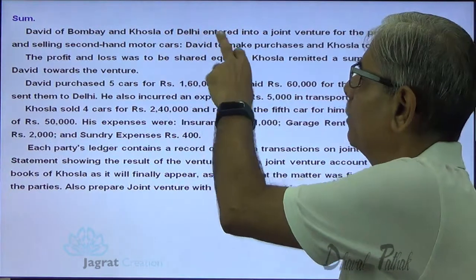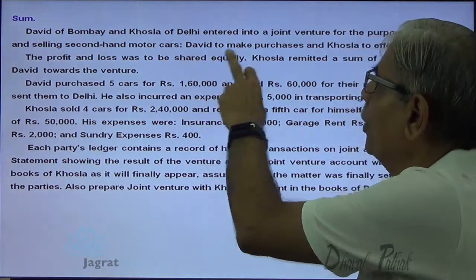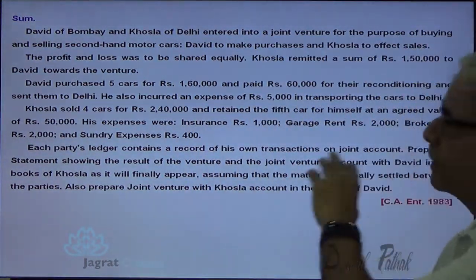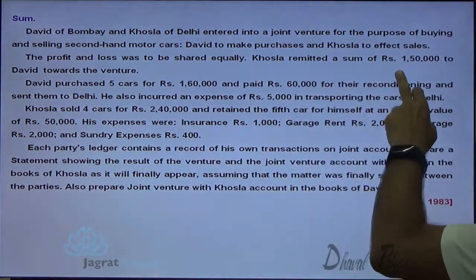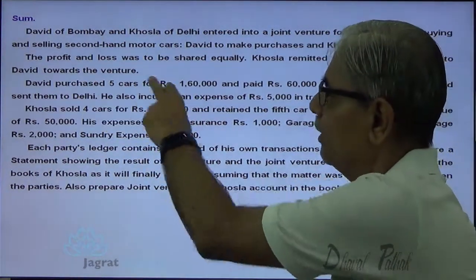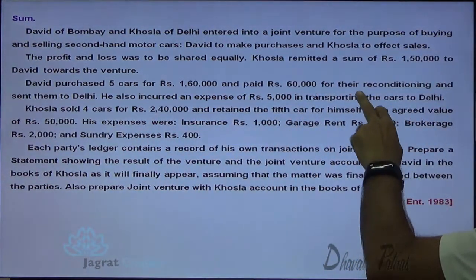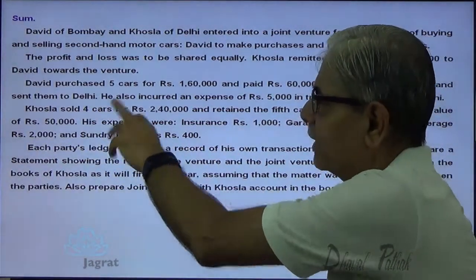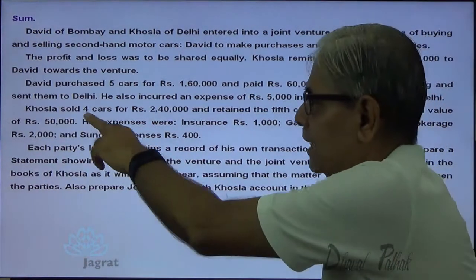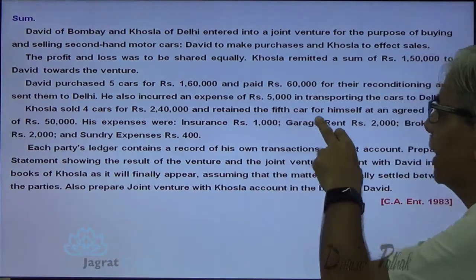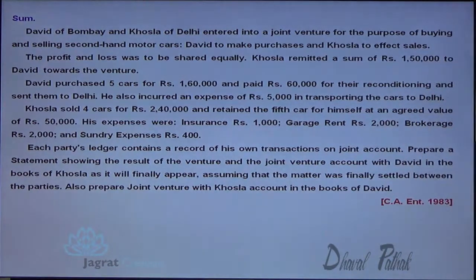David of Bombay and Khosla of Delhi entered into a joint venture for buying and selling second-hand motor cars. David was to make purchases and Khosla to effect sales. Profit and loss was to be shared equally. Khosla remitted rupees 1 lakh 50,000 to David for the joint venture. David purchased five cars for rupees 1 lakh 60,000, paid 60,000 for their reconditioning, and sent them to Delhi. He also incurred transportation expenses of 5,000.